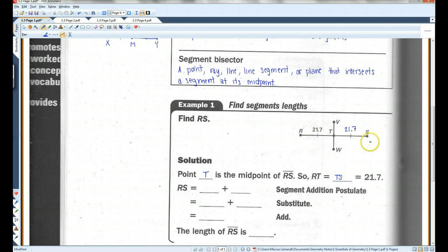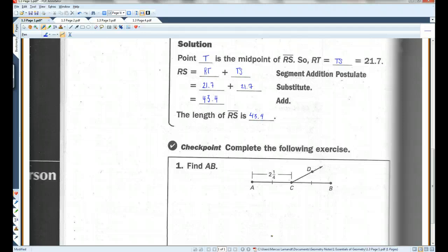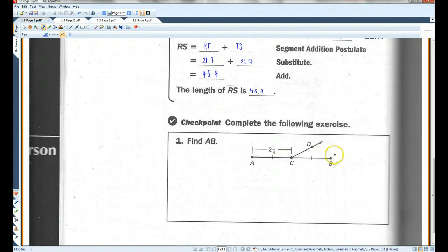Now I know that RS is RT plus TS. Once again, that's the segment addition postulate. I'm going to substitute the values that I'm given in the diagram and then add. 7 plus 7, that's 14. Carry the 1. 43.4. So the length of RS is 43.4. Checkpoint. I'd like you guys to try this one on your own.